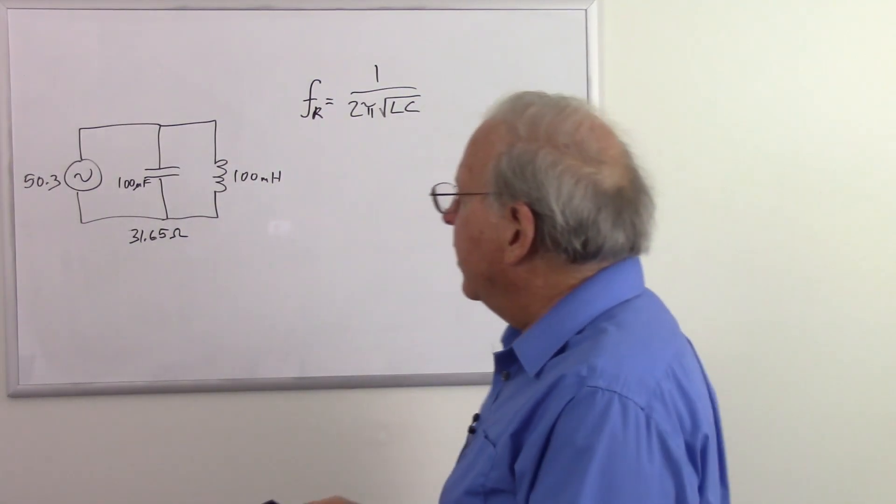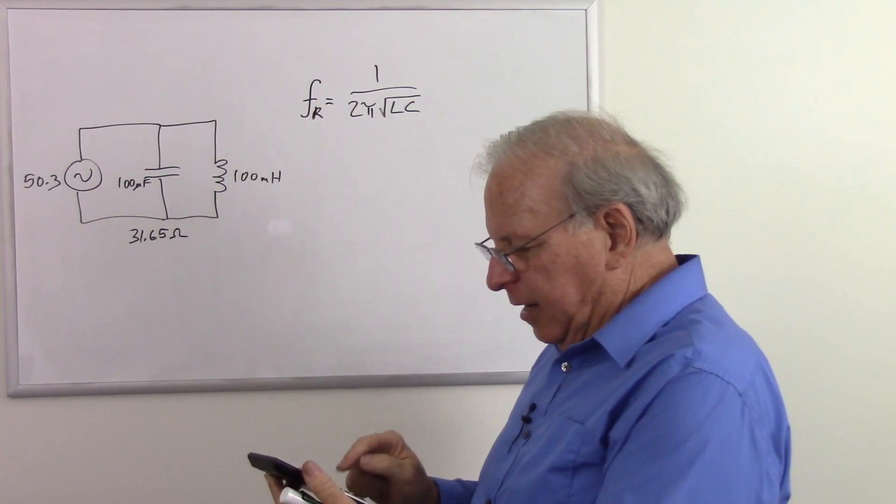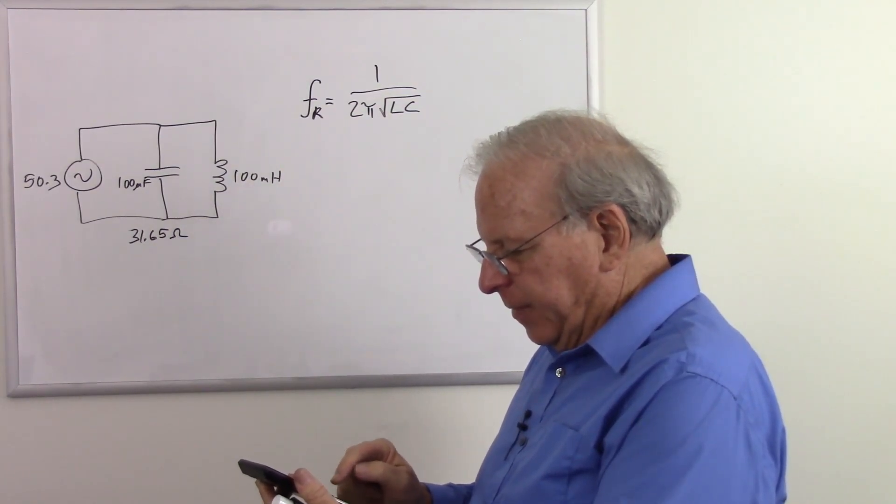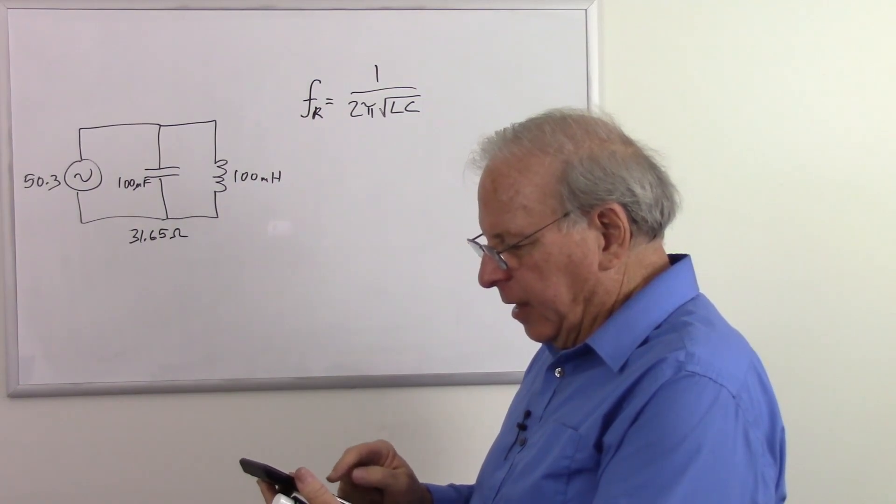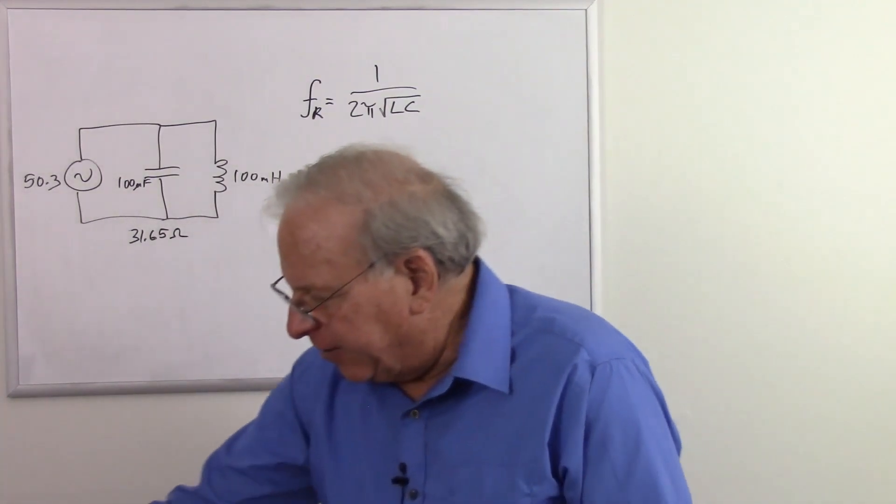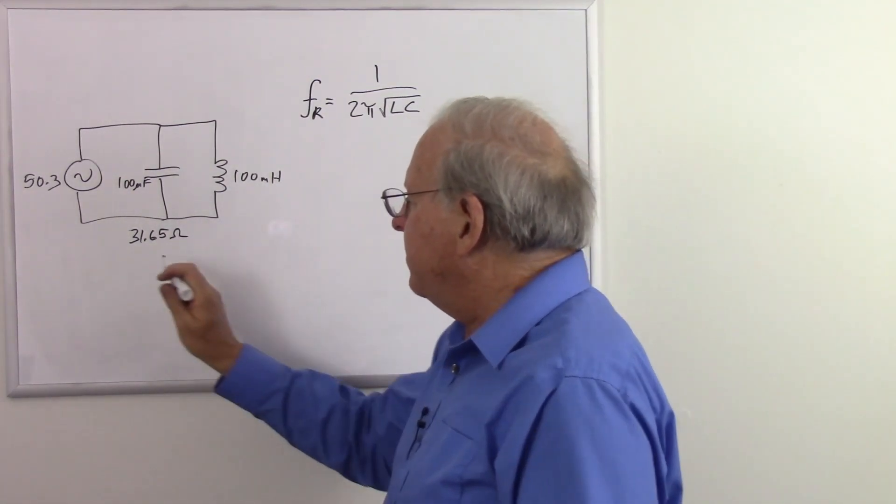Now let's do the same for the inductive reactance. That's going to be 6.28 times 50.3 times 0.1 equals 31.58. So pretty close. Definite rounding error.